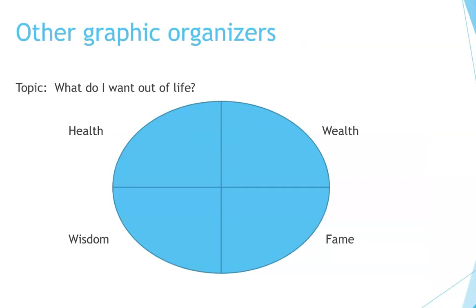Here are some other graphic organizers. For example, let's say your topic is 'What do I want out of life?' Well, you can think like Benjamin Franklin: health, wealth, wisdom — and add fame to that.